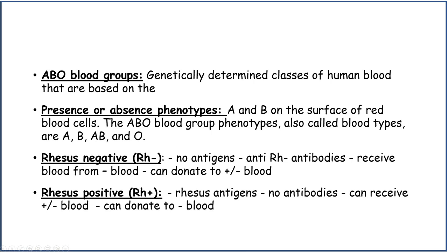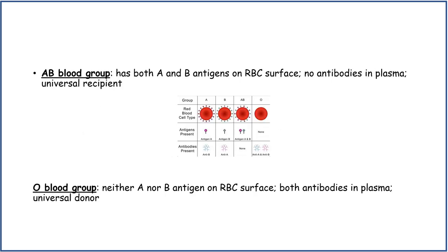ABO blood groups are genetically determined classes of human blood based on their genotypes — the presence or absence of A and B antigens on the surface of red blood cells. The ABO blood group phenotypes, also called blood types, are A, B, AB and O. Blood group A has A antigens, B has B antigens, AB has both A and B antigens, and O has none.